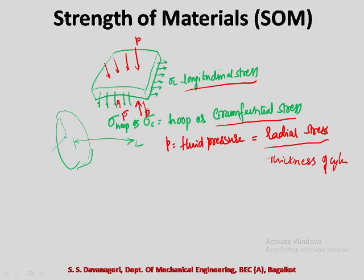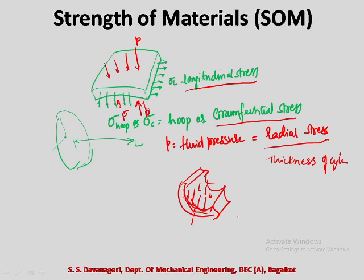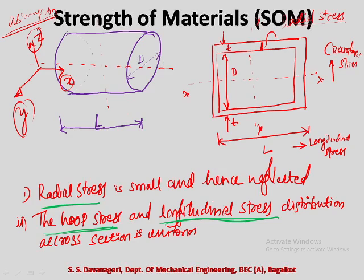As the fluid pressure increases, the diameter and thickness go on decreasing. In thin cylinders, we consider that radial stress is neglected because of the small thickness. Also, the hoop stress and longitudinal stress distribution across the cross section is uniform — there is no variation of stresses in the circumferential or longitudinal directions.